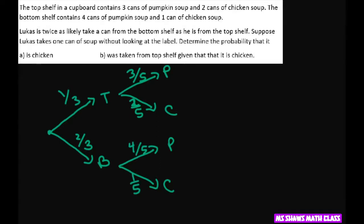of five chicken. So let's answer some questions. It says Lucas takes one can of soup without looking at the label. We want to determine the probability it's chicken. Well, here are your two chickens, so what you do is multiply these two branches. It could be from the top shelf times the chicken, or it could